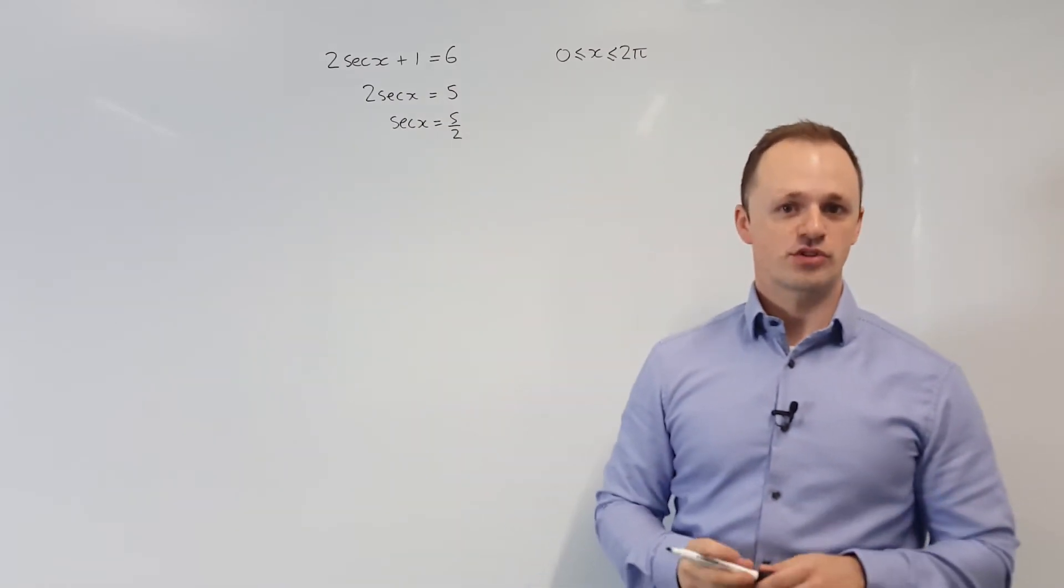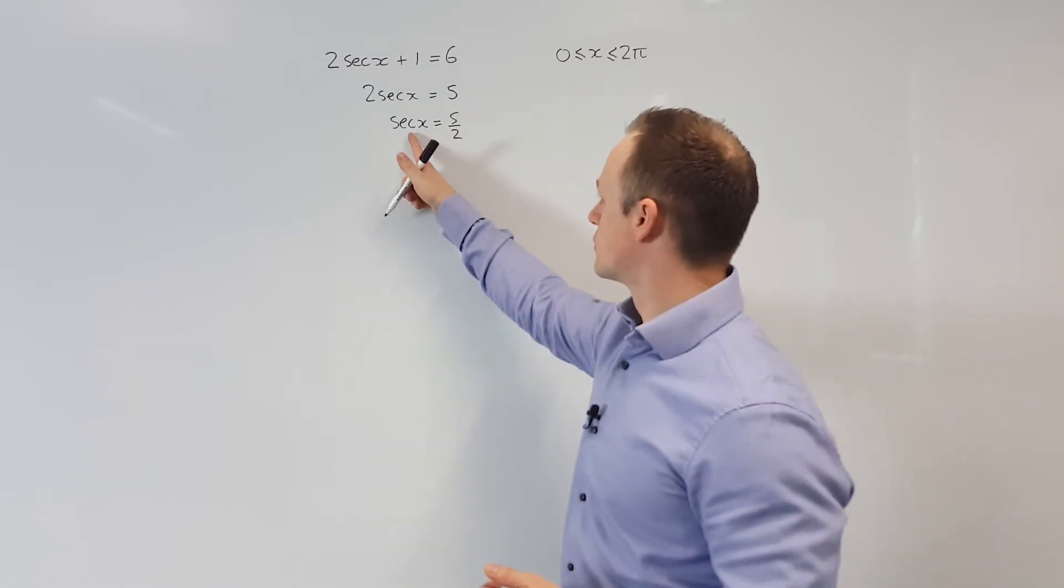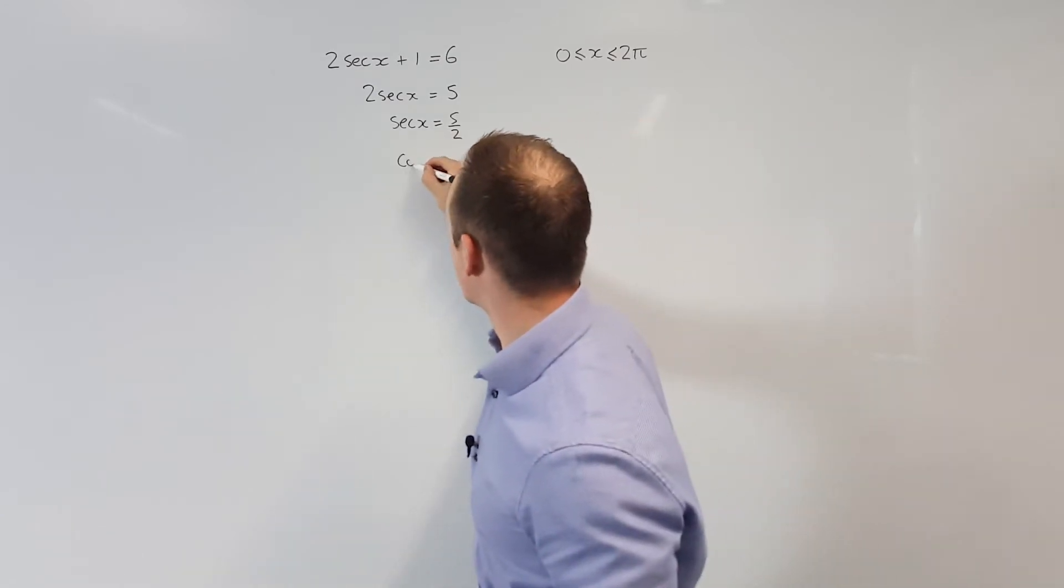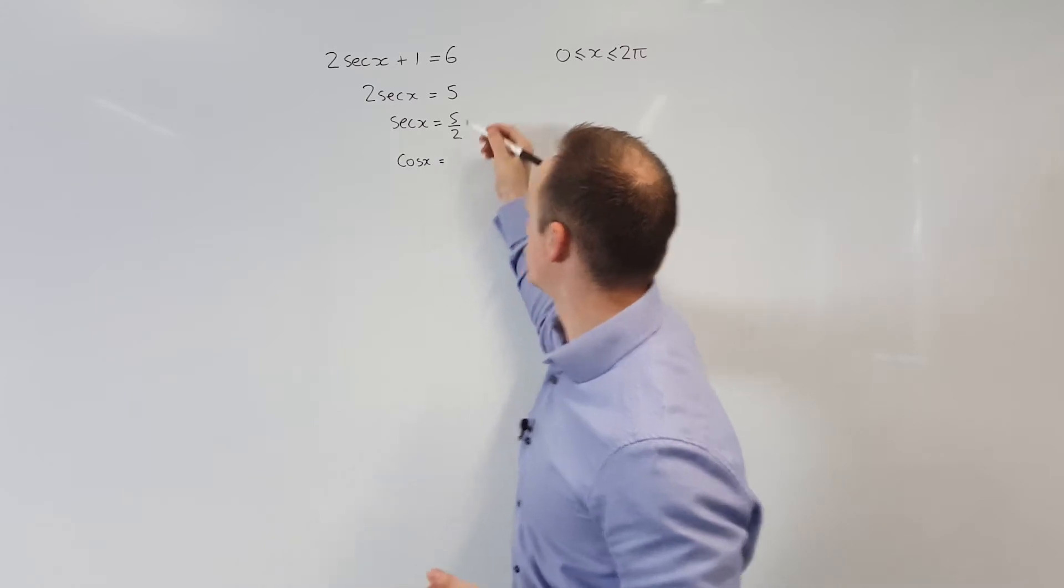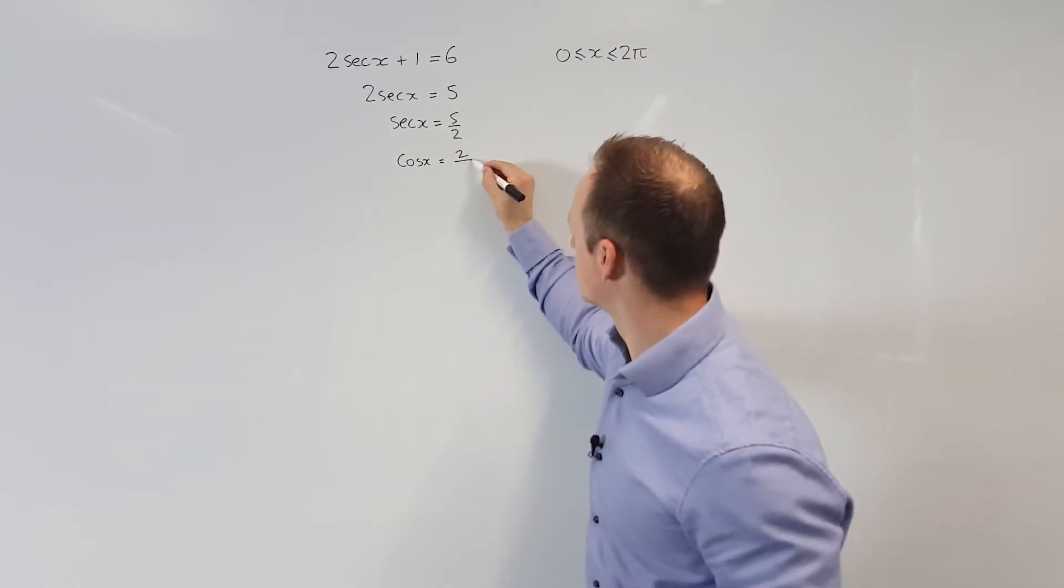Next, we're going to take the reciprocal of both sides. So the reciprocal of sec is cos, so we get cos x. And the reciprocal of 5 over 2 is 2 fifths.